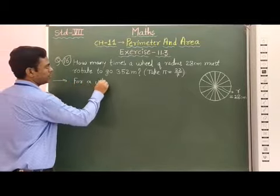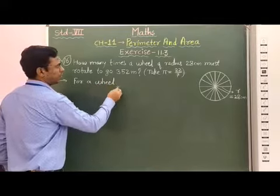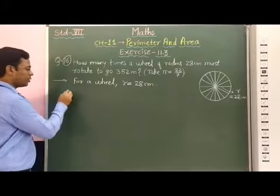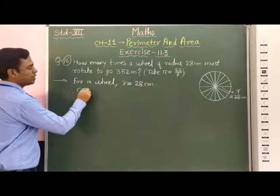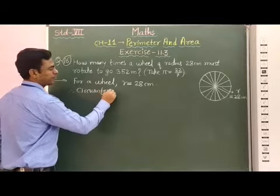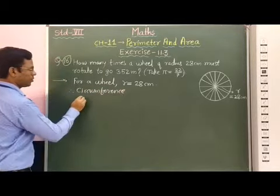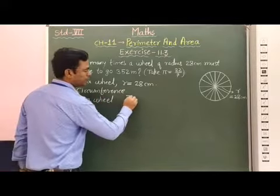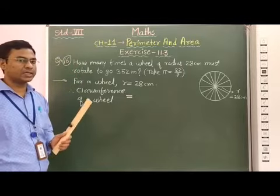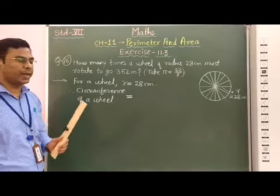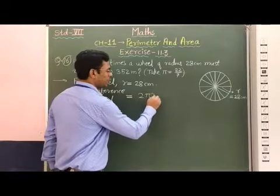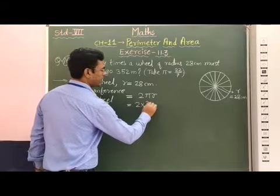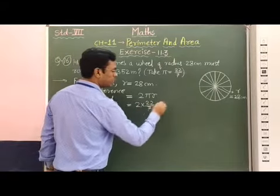For the wheel, radius is equal to 28 cm. Therefore, the circumference of this wheel is equal to 2πr, which is equal to 2 into 22/7, and radius is equal to 28.